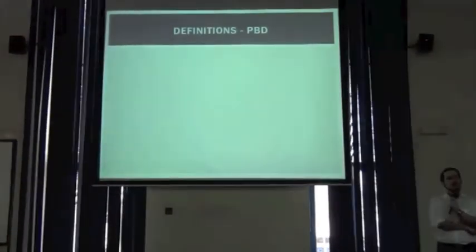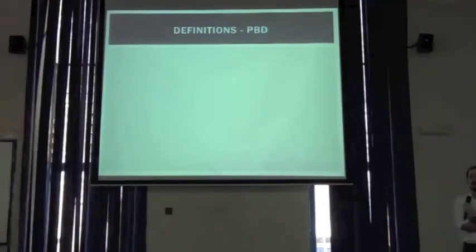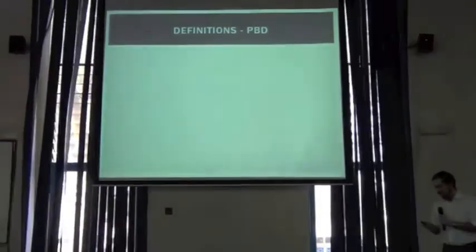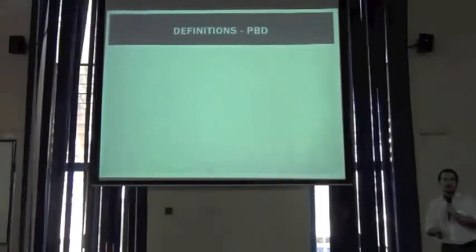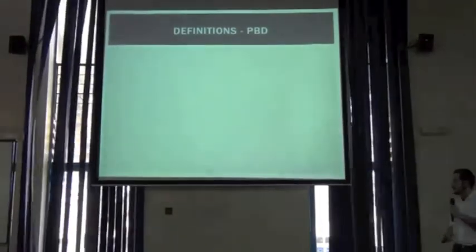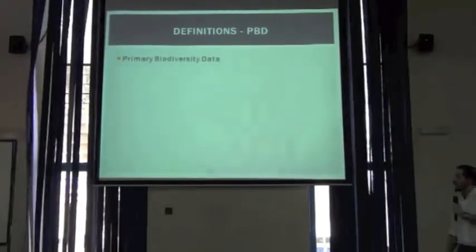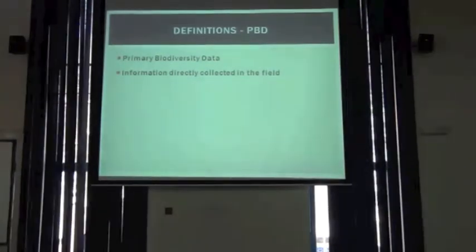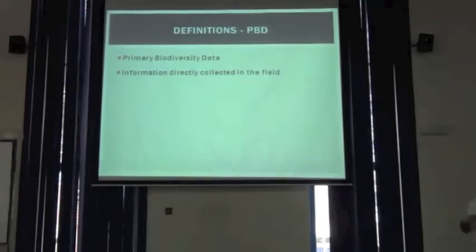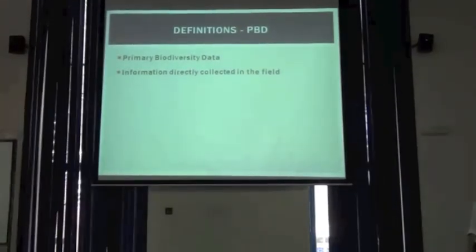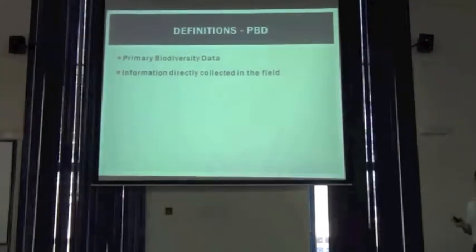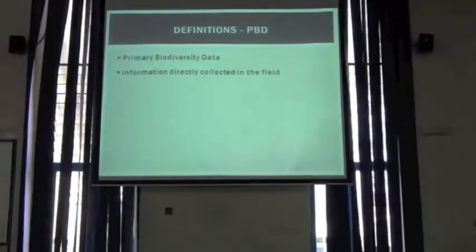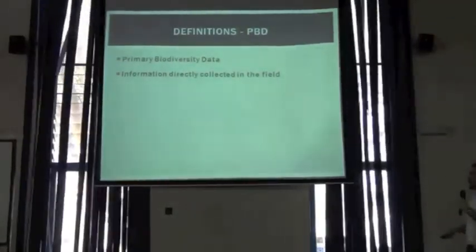I'll begin by asking you a question: how many of you already know what a primary biodiversity data record is? Charles said something in the general introduction of the course, but I'll repeat a bit. Primary biodiversity data, or PBD, is the most basic piece of information we can get directly from the field. When we go to the field to sample, we get basic pieces of information that are free of further interpretation or calculations. That's what we call primary biodiversity data.